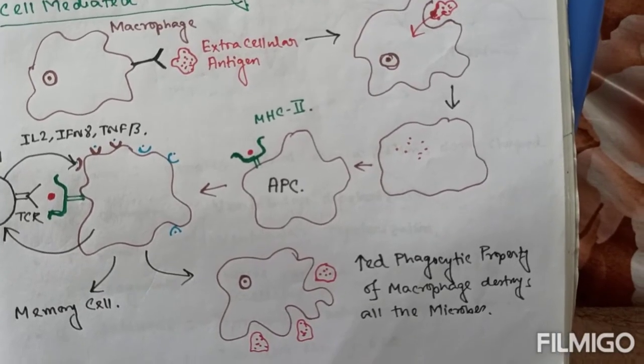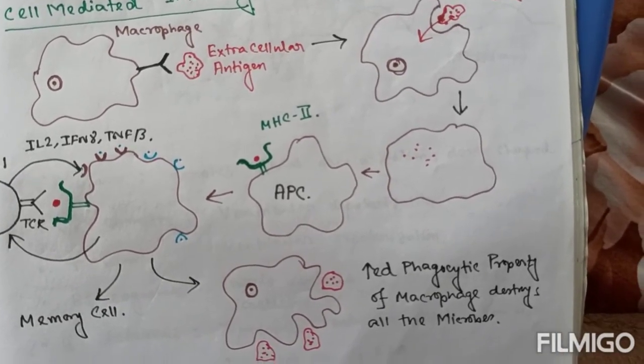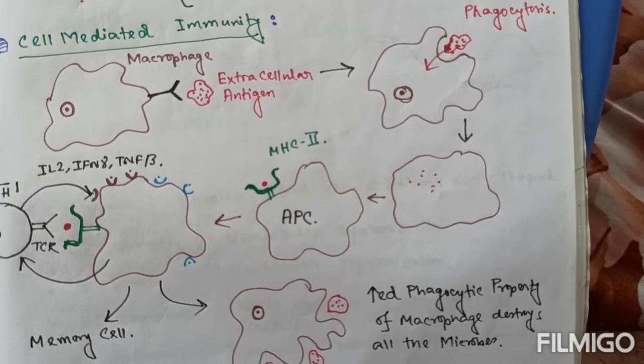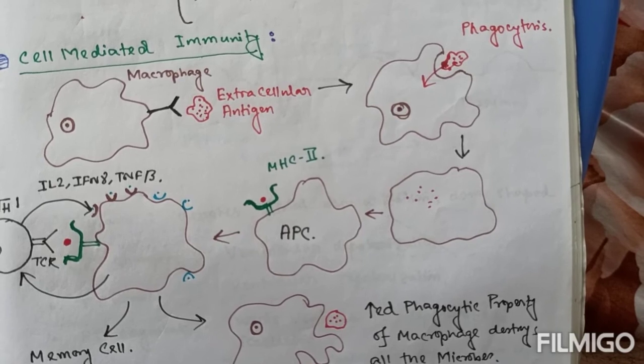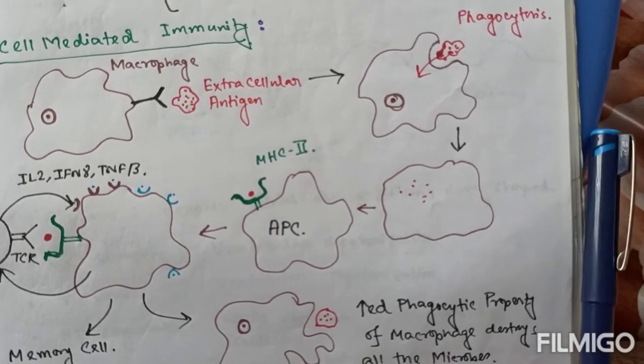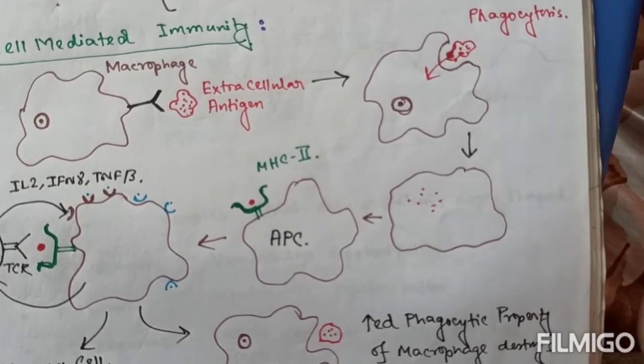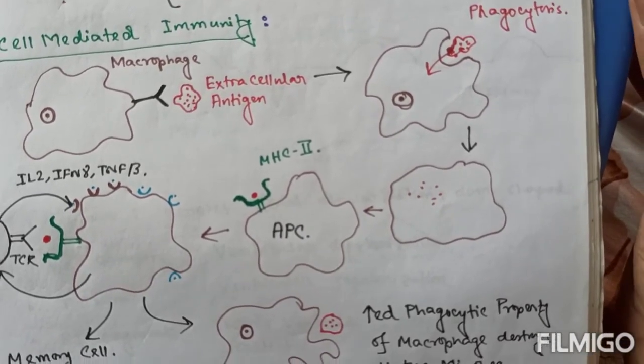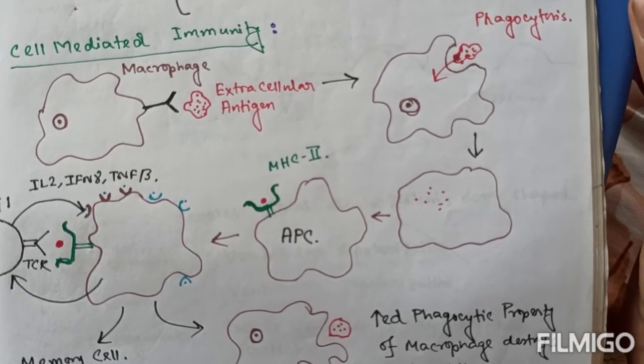And then it will secrete granzymes which will enter through this perforation inside the cell and will destroy the antigens present inside. So thus both intracellular and extracellular antigen are destroyed by cell-mediated immunity.